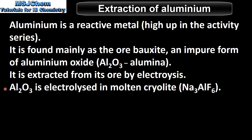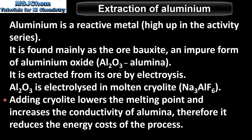Alumina is electrolyzed in molten cryolite. Adding cryolite lowers the melting point and increases the conductivity of alumina, therefore it reduces the energy costs of the process.